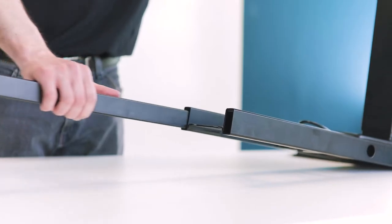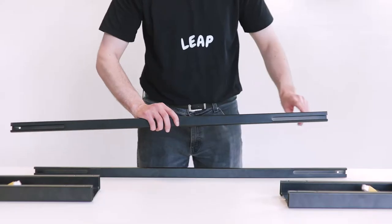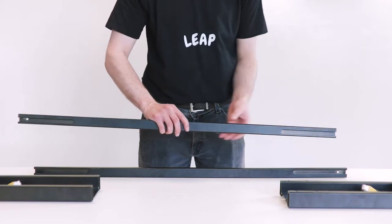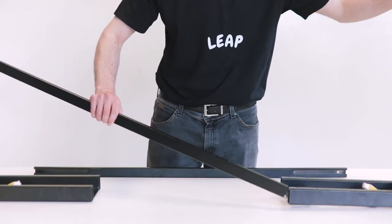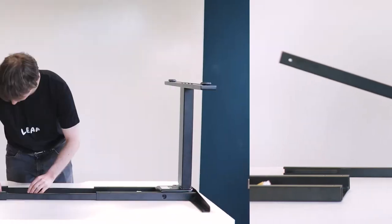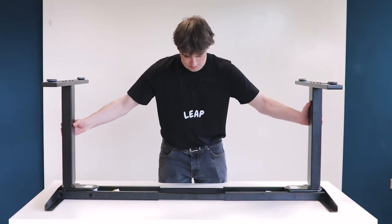When this is finished, take the center rails that we put aside earlier and place them down with the grooves facing inwards. Make sure that the thicker ends are closer to the floor. You can now bridge the two legs together.